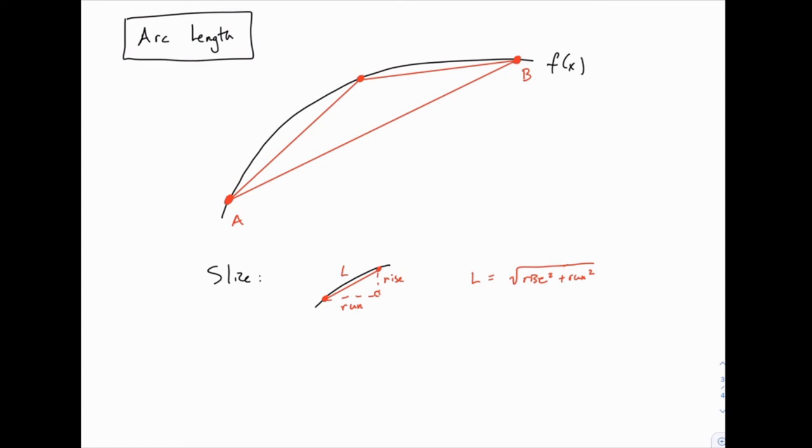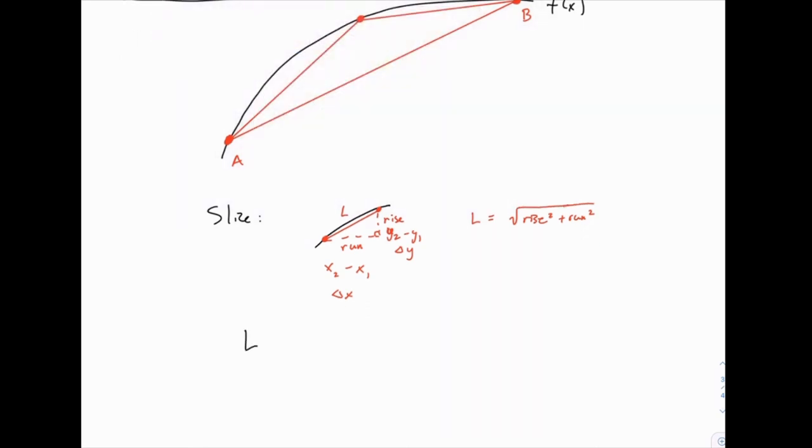So then the run and the rise like we've seen before, even in your algebra classes, this is the difference in two x values, and the rise is the difference in two y values. So we can think of this as delta x, and this is delta y. A small x distance and a small y distance. So this length of one little segment would be the square root of delta y squared plus delta x squared, or I'll write it in this order, delta x squared plus delta y squared.